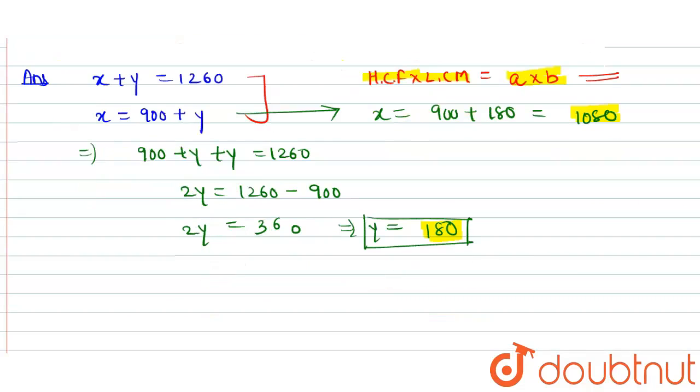The value of LCM (that is x) is 1080, and the value of HCF (that is y) is 180. We just need to multiply both the numbers to get the product of two numbers. Hence, a into b will be equal to LCM into HCF.